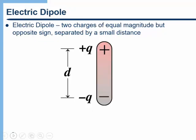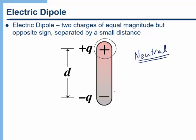An electric dipole is an object that is overall neutral, but within the object there is a charge separation — one end is positive and the other end is negative. The total charge on the object is zero; the object is neutral.